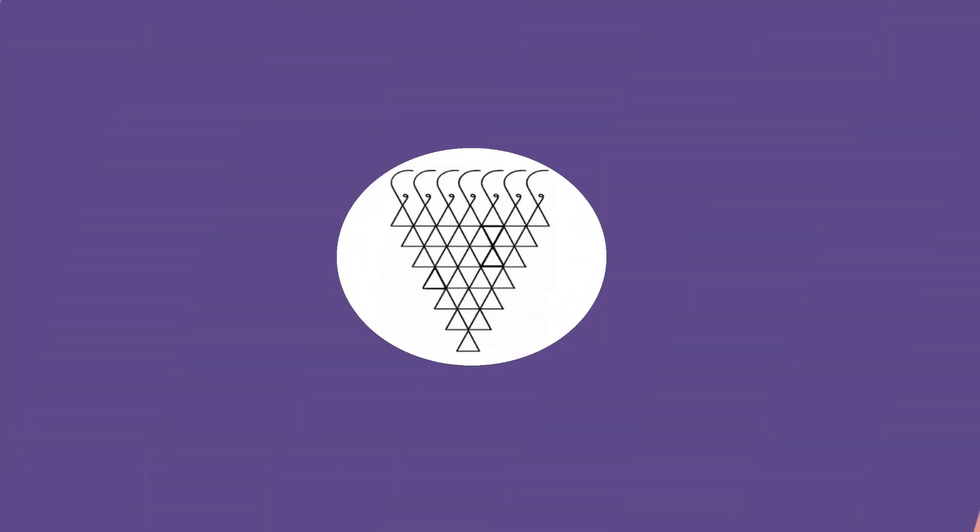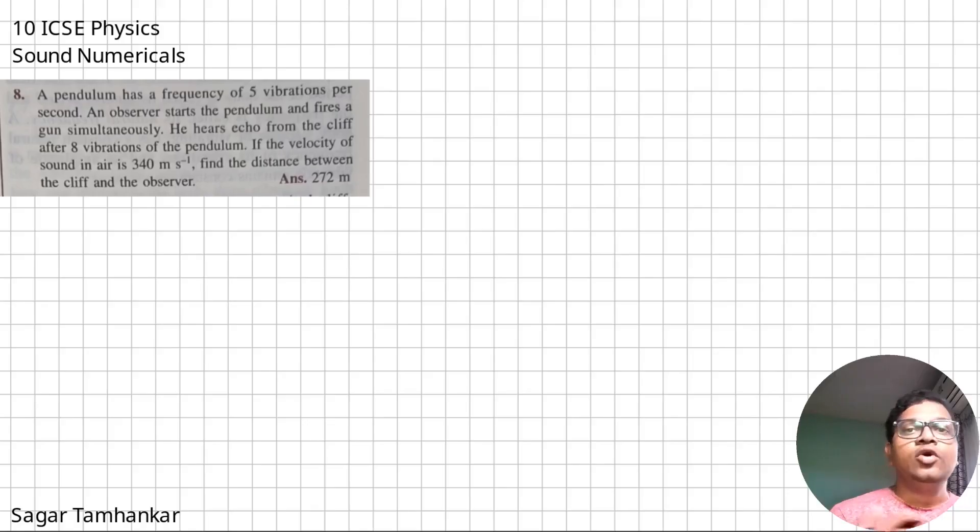Let's do the next one. This is an interesting question. It says that a pendulum has 5 vibrations per second, so that means it has 5 vibrations in 1 second. Now, the pendulum is set into motion and a gun is fired. When the echo is heard, the pendulum has completed 8 vibrations.